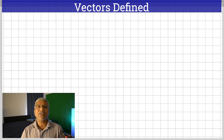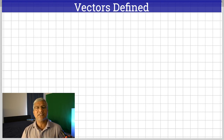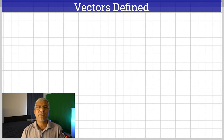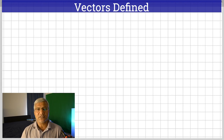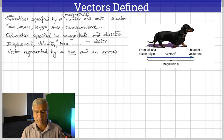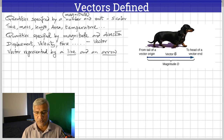On the other hand, when we come to vector quantities, we cannot simply add them. We're going to look at the differences in a moment, but first: quantities specified by a number and unit are scalar.